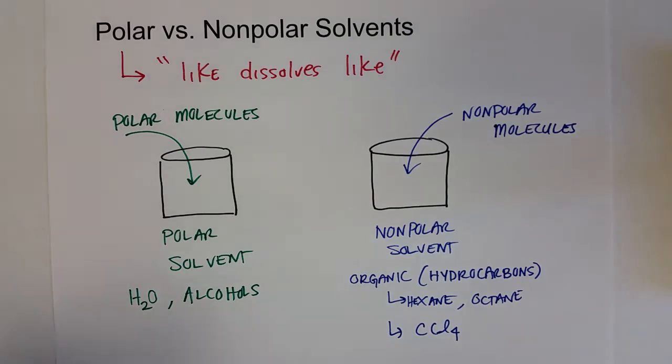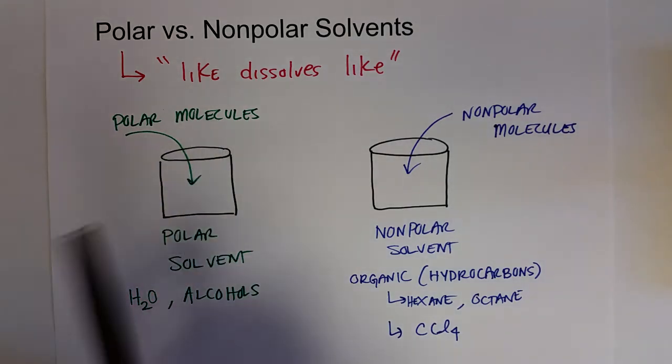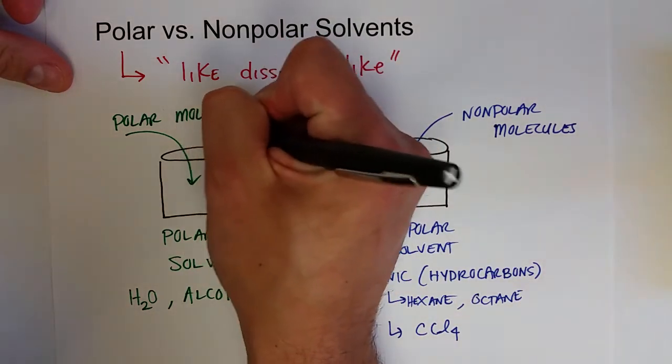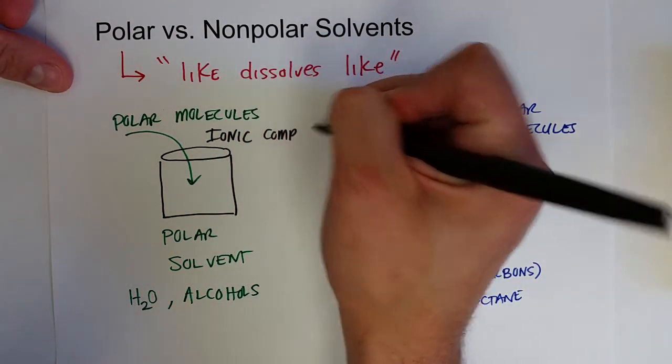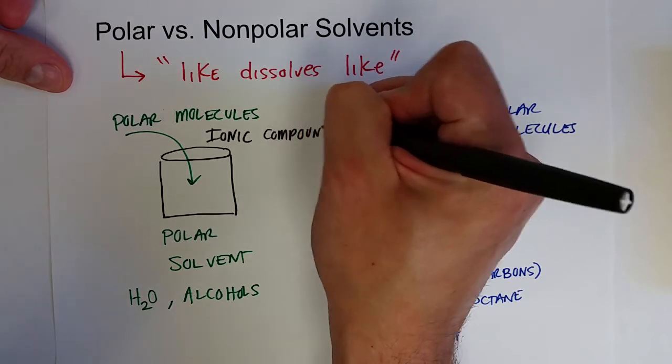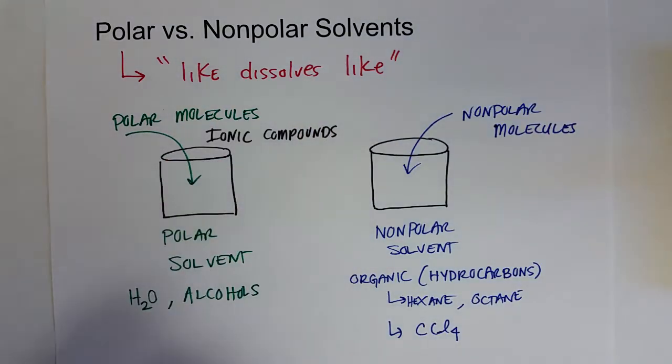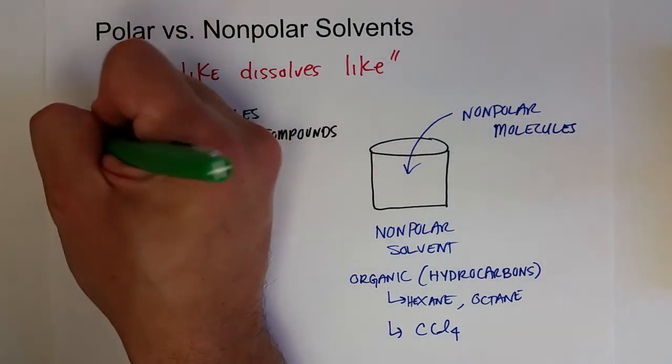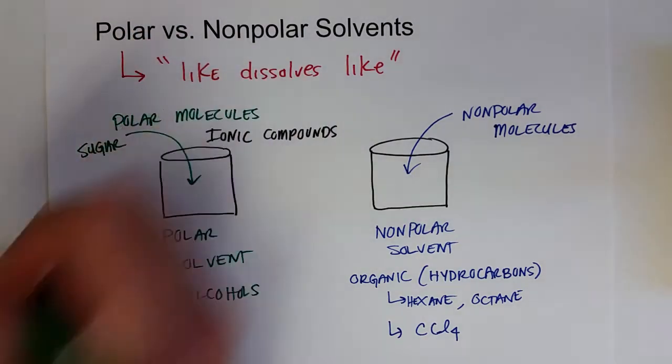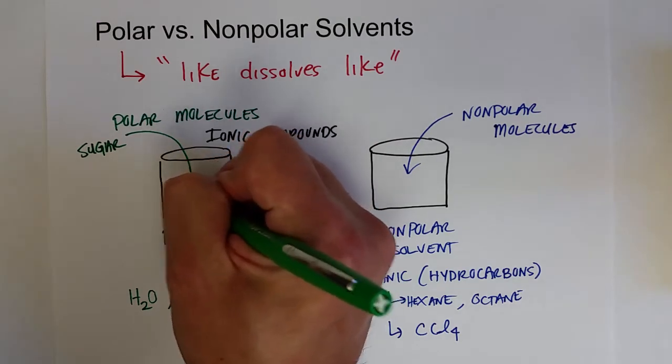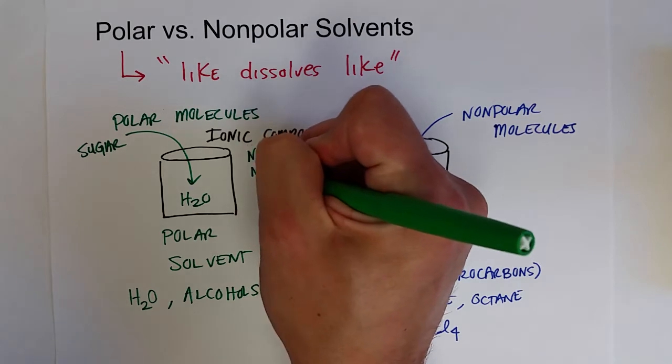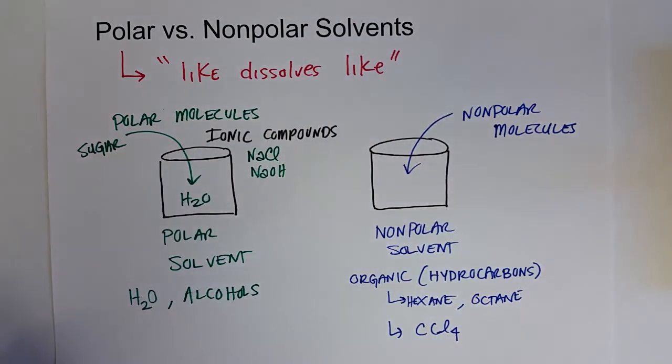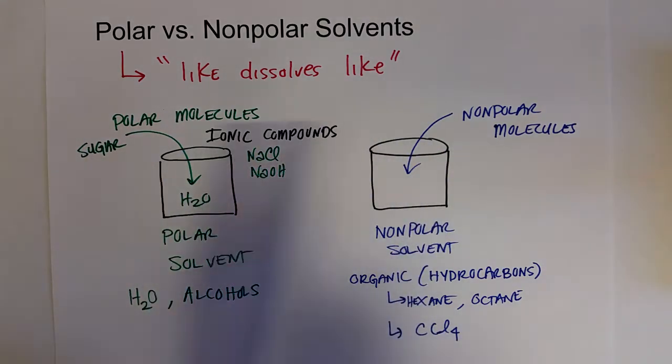In addition to polar molecules, you can also dissolve a lot of ionic compounds in polar molecules. Not all ionic compounds, but a lot. So polar molecules like sugar and other alcohols would dissolve in water. Sodium chloride or sodium hydroxide dissolve in water. Those molecules would not have a high solubility in nonpolar solvents.